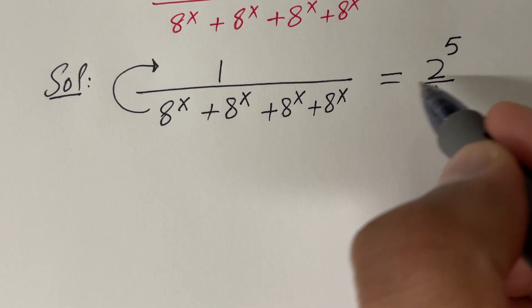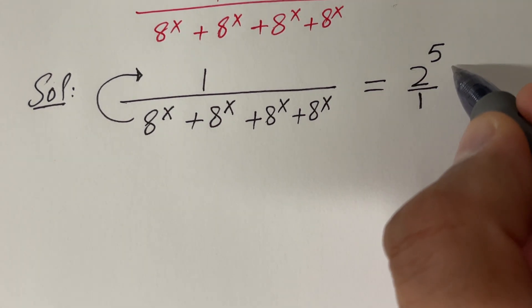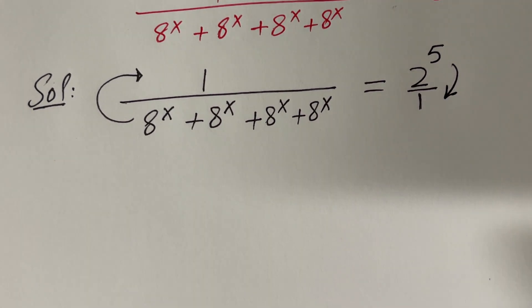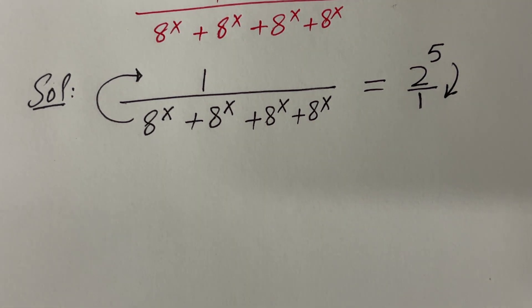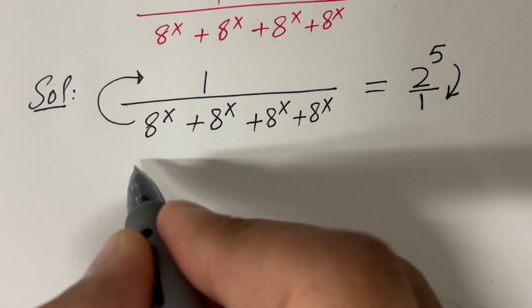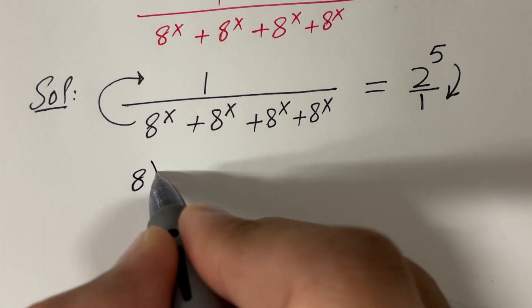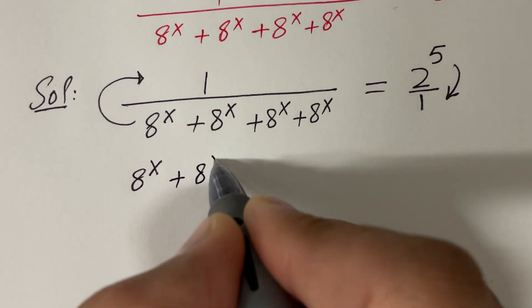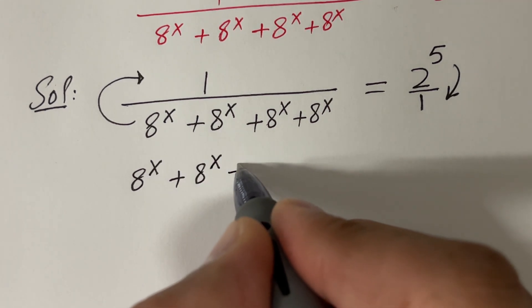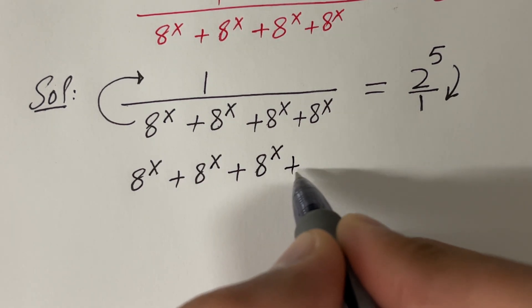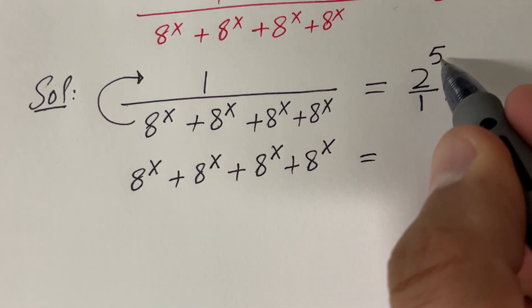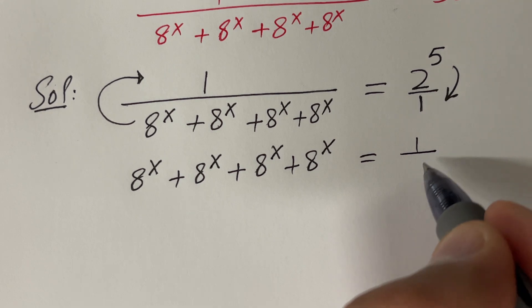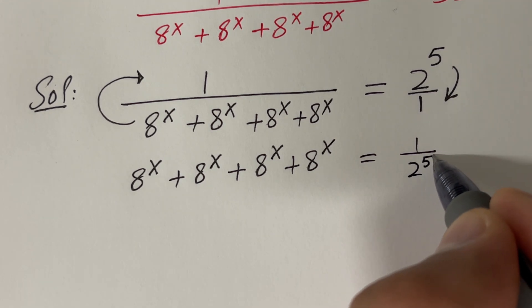We can flip these fractions since there is equality between them. If these two are equal, then their reciprocals will also be equal. In other words, if you flip, then the left hand side will be 8 raised to the power x plus 8 raised to the power x plus 8 raised to the power x plus 8 raised to the power x. And if you flip, then 1 over 2 raised to the power 5 will be on the right hand side.